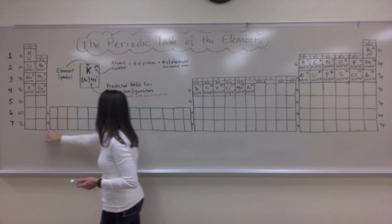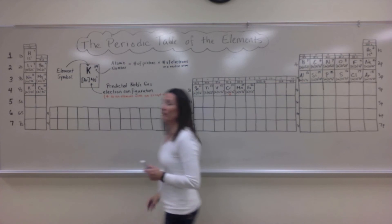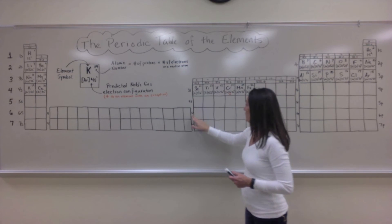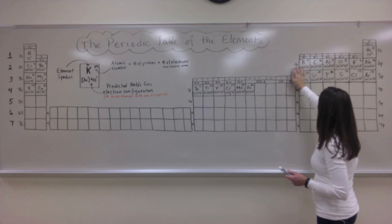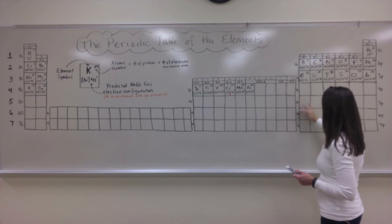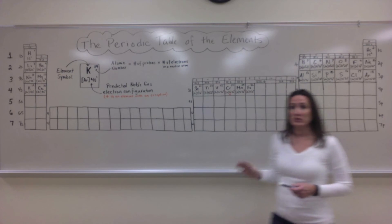For example, f will be 4f and 5f, d will be 3d, 4d, 5d, and 6d, and then p will go back to being the typical period numbers of 2, 3, 4, 5, 6, and 7. Once you've done that...